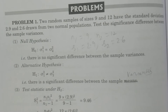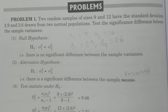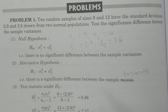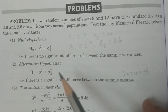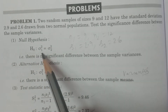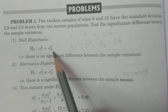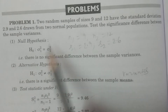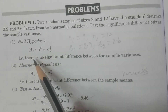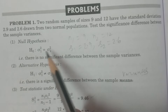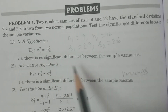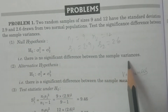For the F-test for equality of variances, we will do 4 points. First point: null hypothesis H0: sigma1 squared is equal to sigma2 squared. That means there is no significance difference between the sample variances.